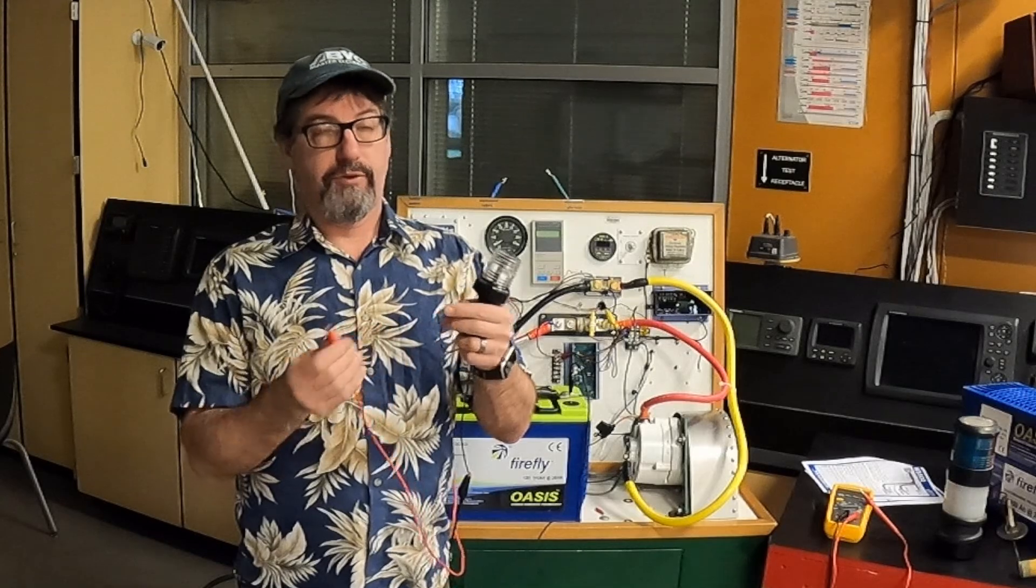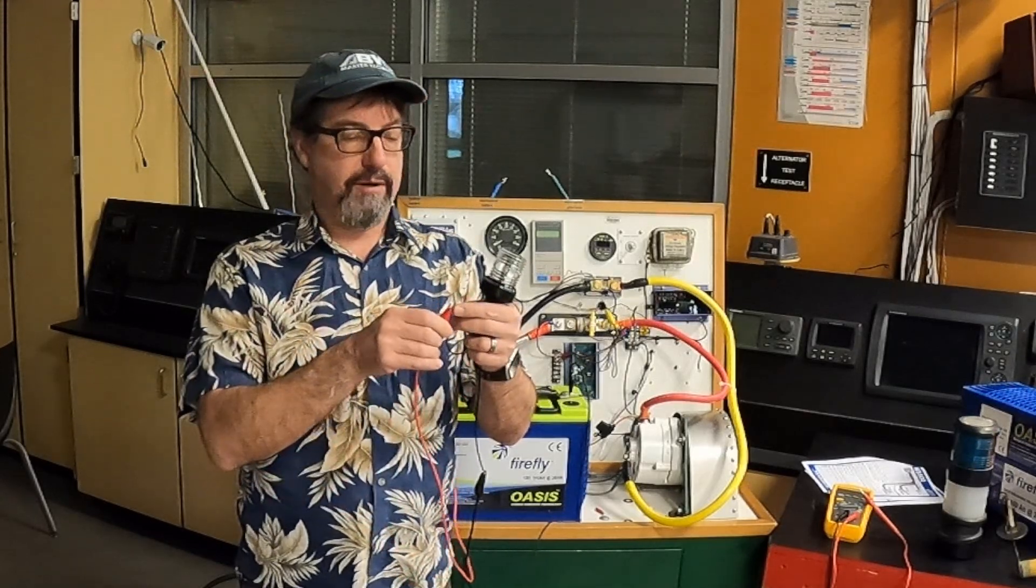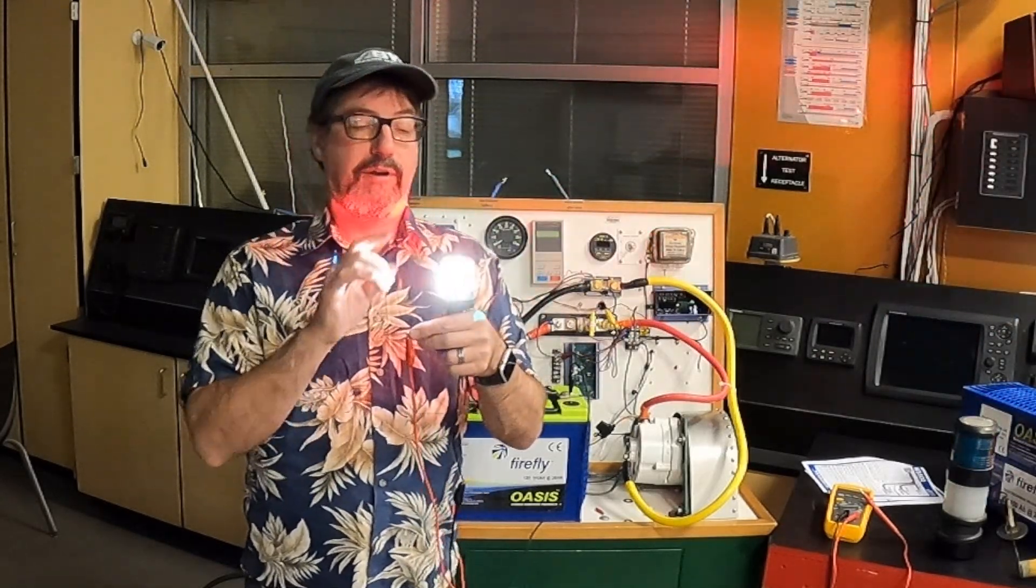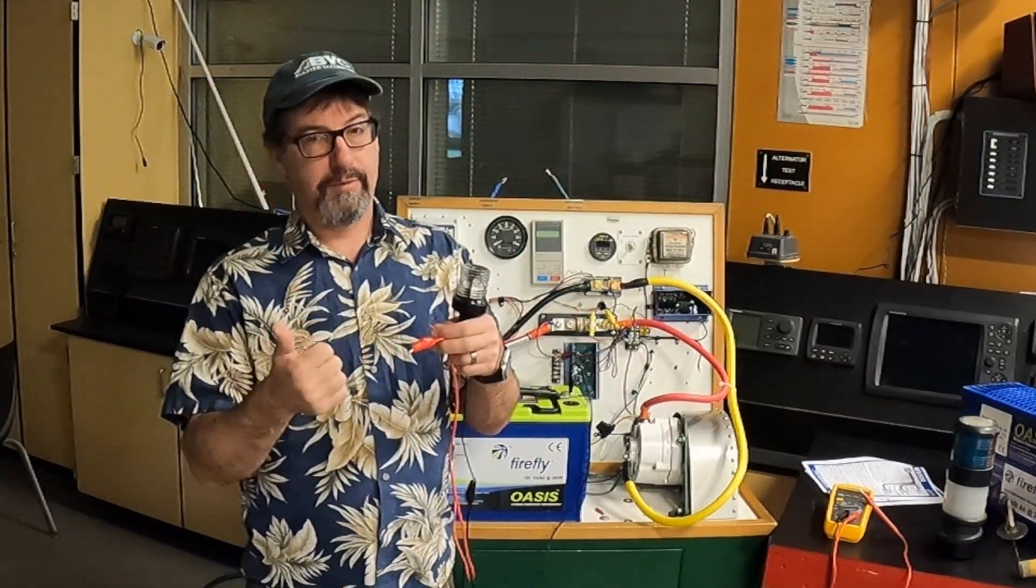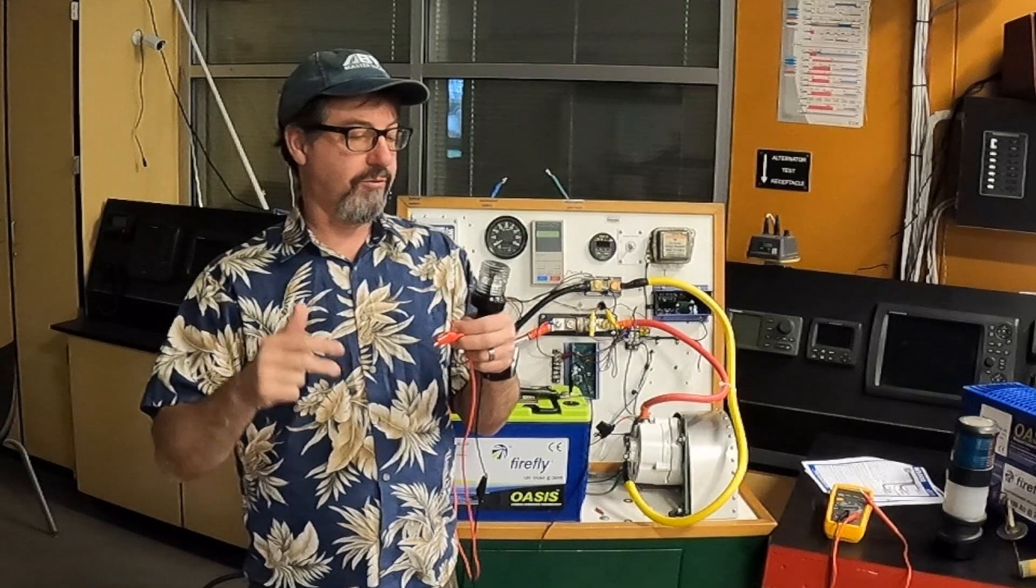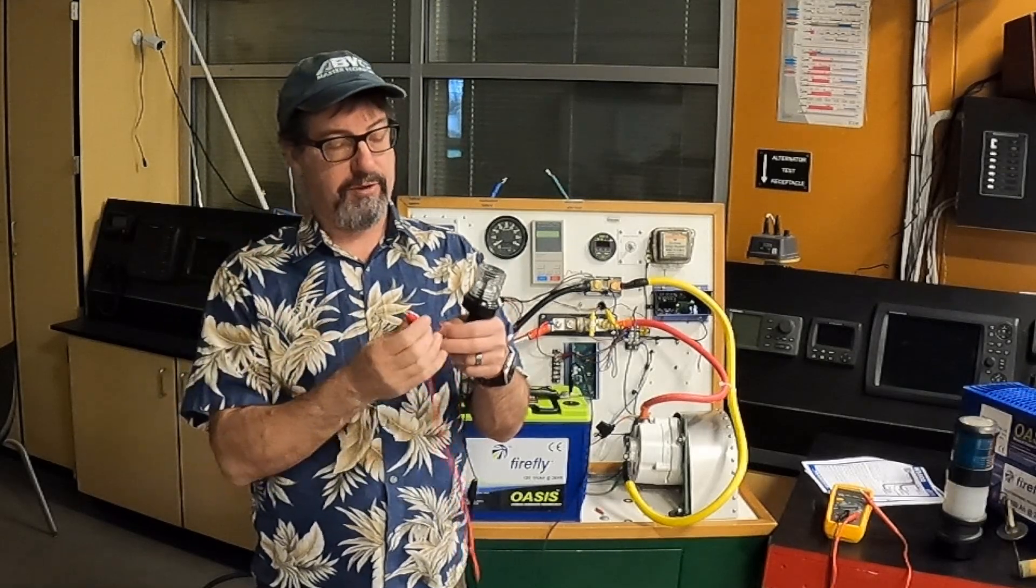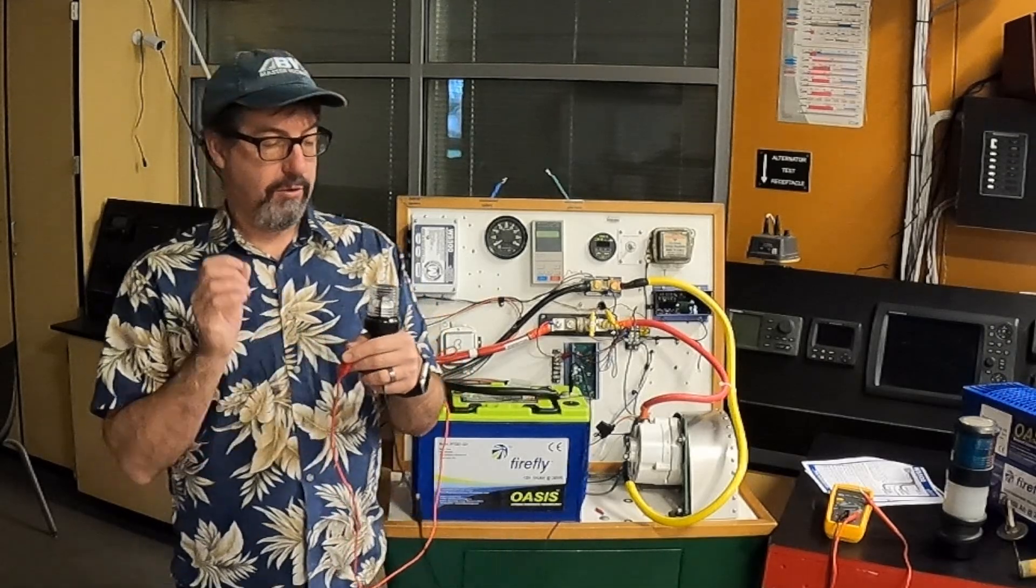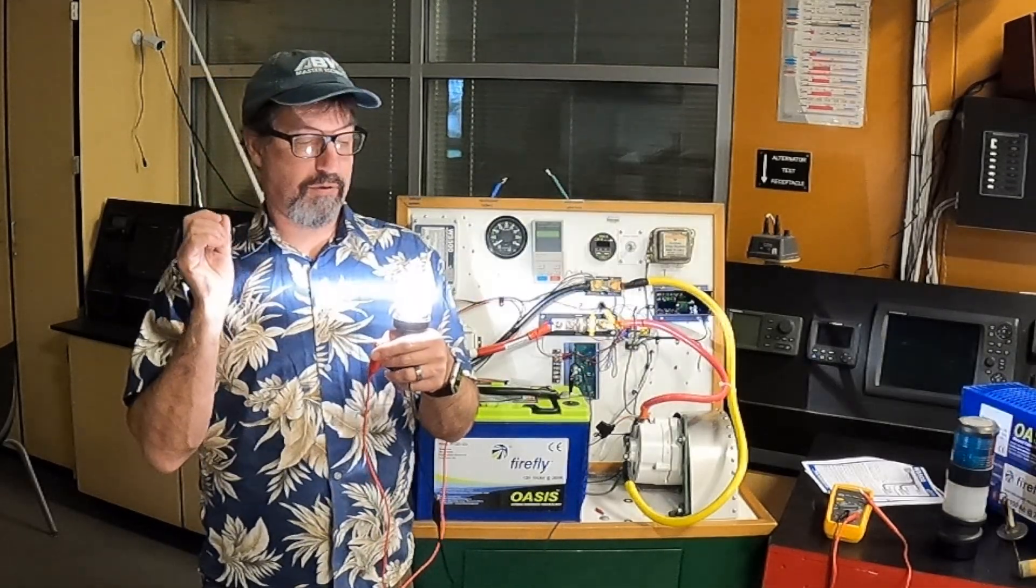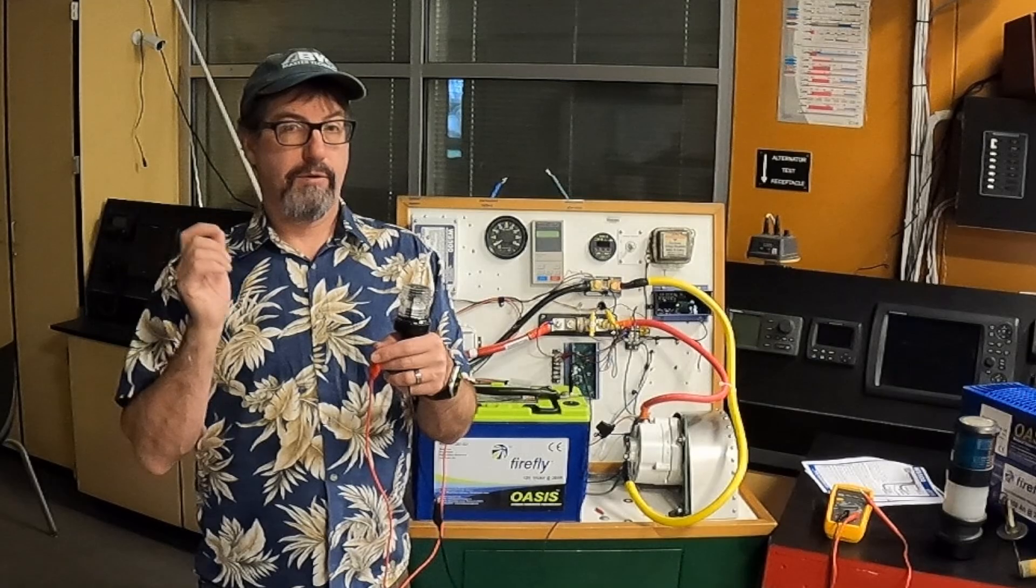So you turn it on and you get anchor light. You turn it off, back on within five seconds, you're going to get your tricolor. Then you turn it off and you got to do your one Mississippi, two Mississippi, three Mississippi, four Mississippi, five Mississippi, then you get your SOS.